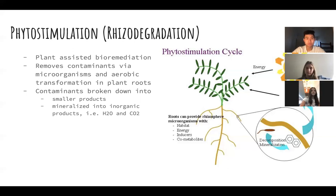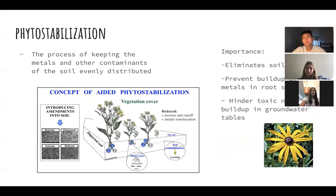Phytostabilization is the process by which plants create a covering on the surface of the soil in order to prevent the movement of metals and other contaminants within the soil. This is important because it helps keep the nutrients in the soil while at the same time making sure there is not a great buildup of toxic components at the root level. Different ways that phytostabilization can occur include lessening the occurrence of windblown dust, minimizing erosion of soil, and through the reduction of solubility of soil contaminants.